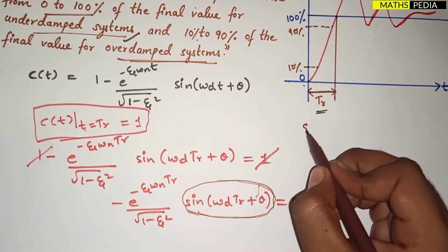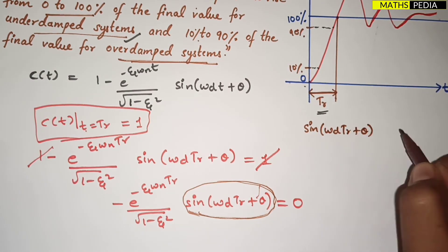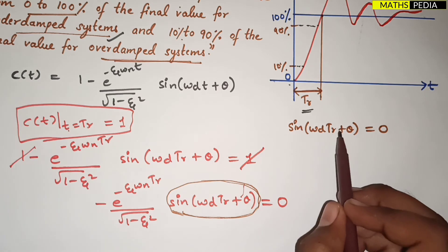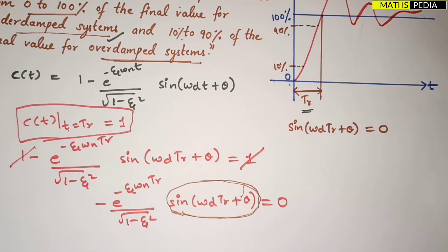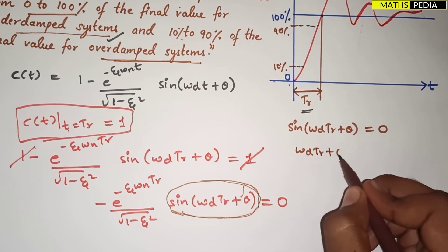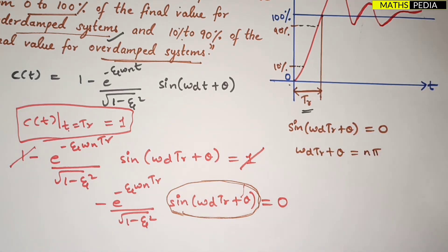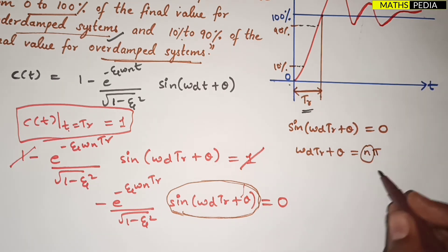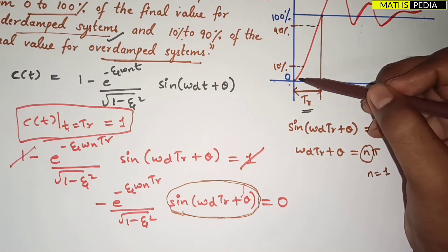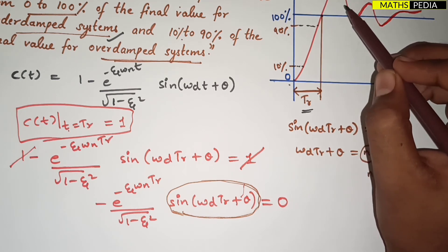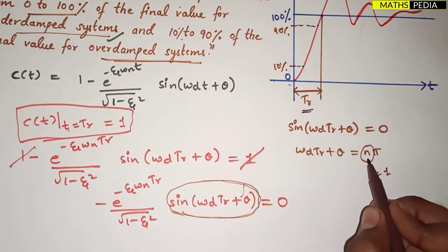So we have sin(ωd·T_r + θ) = 0. Trigonometrically, this means ωd·T_r + θ = nπ. Since we are considering the first attempt of the response to reach 100 percent — going from 0 to 100 percent — we take n = 1.